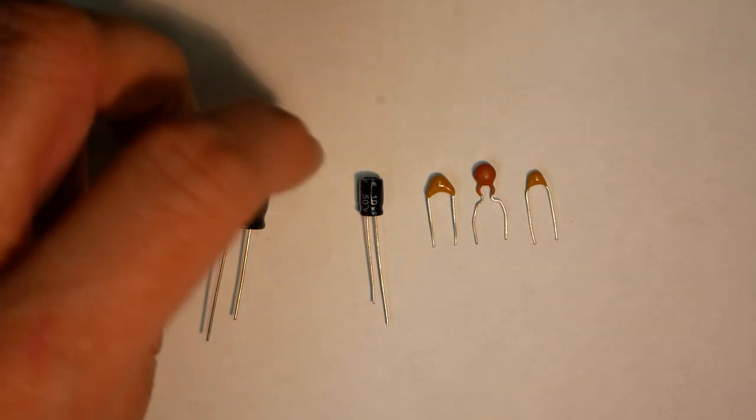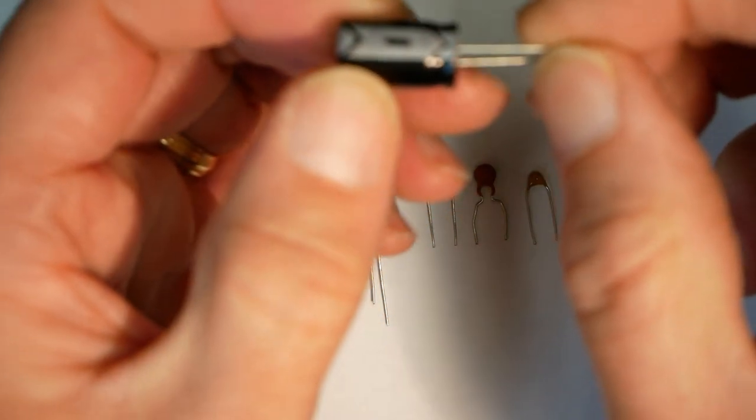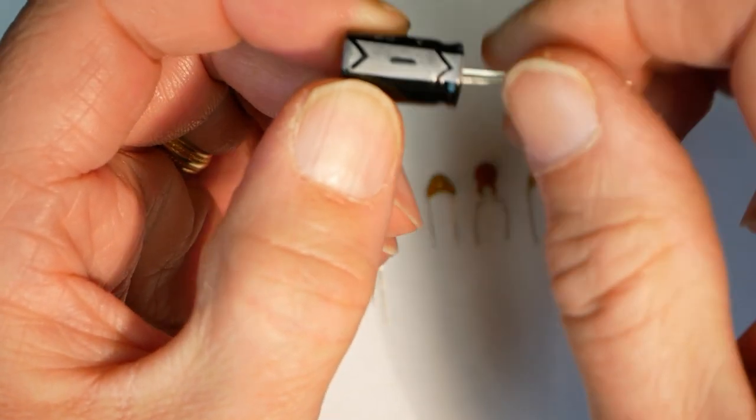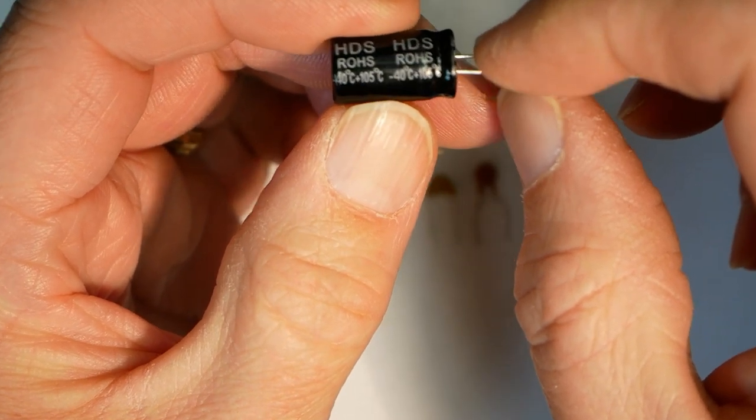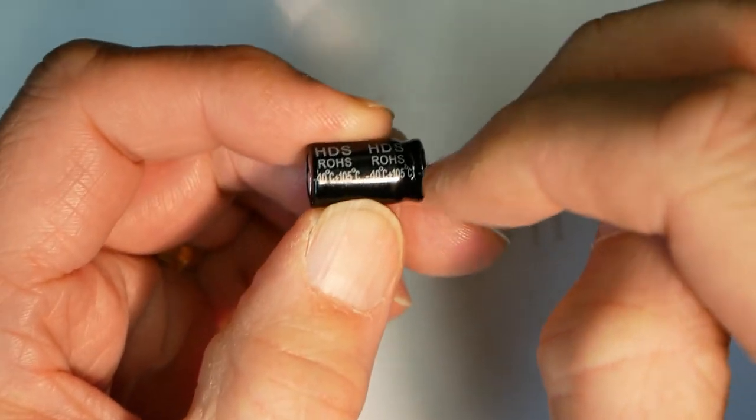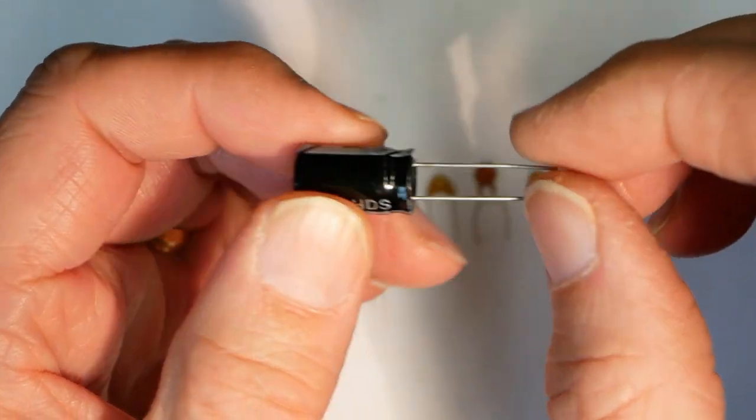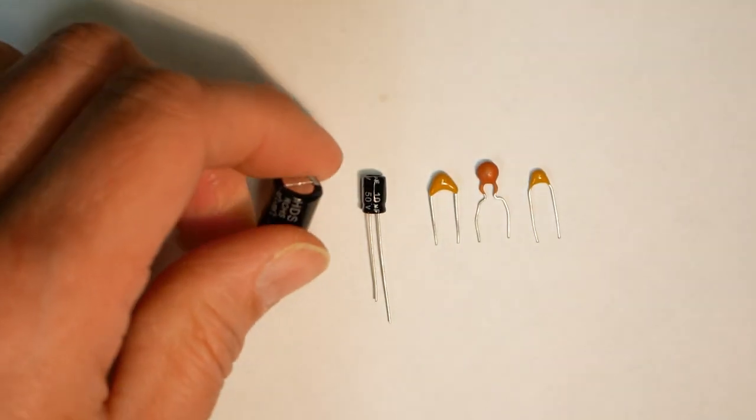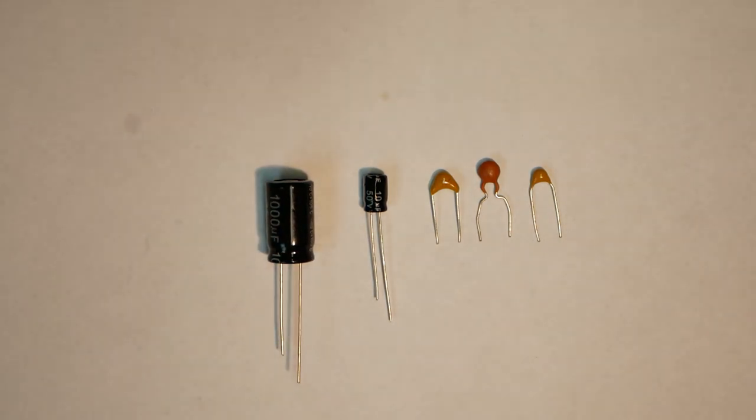Some capacitors actually have a polarity. So like in this case, the electrolytic capacitor, you see that there's the minus side is marked. And in some cases they also mark the positive side. But it can be that only one polarity is marked. You can actually have polarity in other capacitor types, like tantalum capacitors. They can also have polarity. So always check that when you're dealing with capacitors.